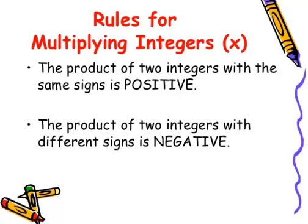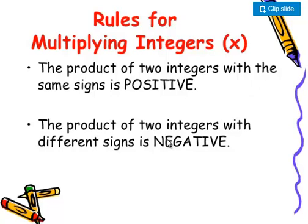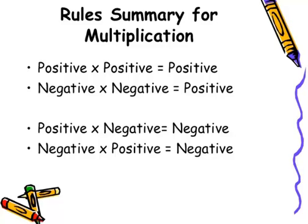Here are the rules for multiplying integers. The product of two integers with the same sign is always positive. The product of two integers with different signs is always negative. Keep these two rules in mind. Rule summary for multiplication: positive times positive equals positive; negative times negative equals positive.